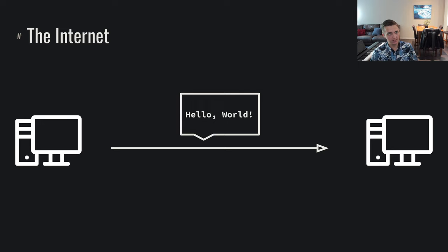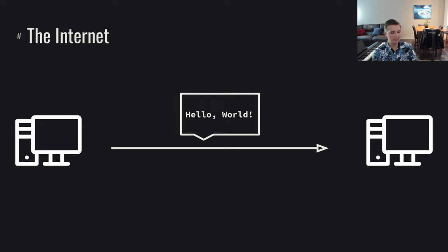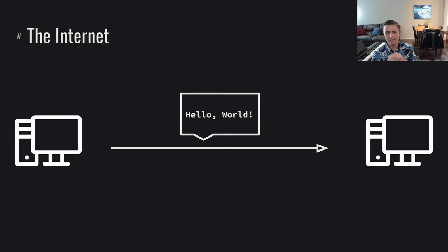The basic idea of the Internet is that in order to communicate with some remote system, if we want to send the message 'hello world' from my computer to someone else's computer somewhere else in the world, we need a way of transmitting that message. We can imagine these two computers are linked up and we send the message, maybe over a wire or maybe over something else. The core idea is sending a message from my system to another system over a network remotely.